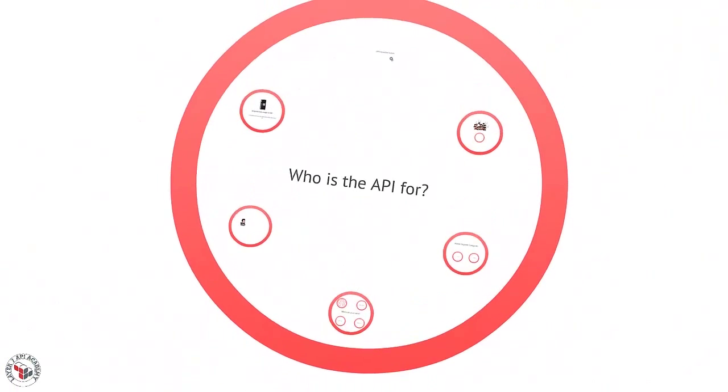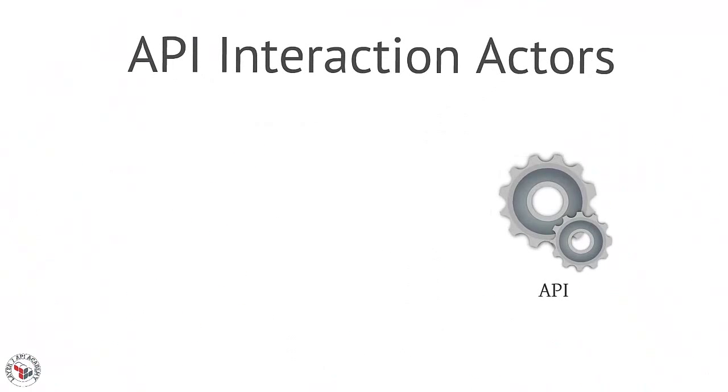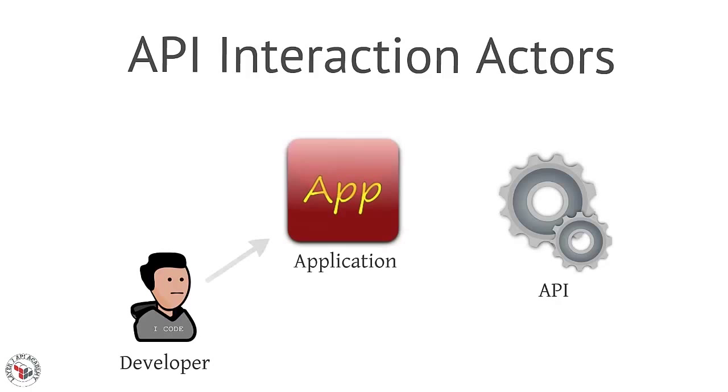So let's start with this question of who will use the API we are building. There are a lot of actors involved in an API interaction. But when we're building this interaction model, we're going to focus on three of them in particular: the developer, the application that the developer builds, and the human end user who in turn uses that application.